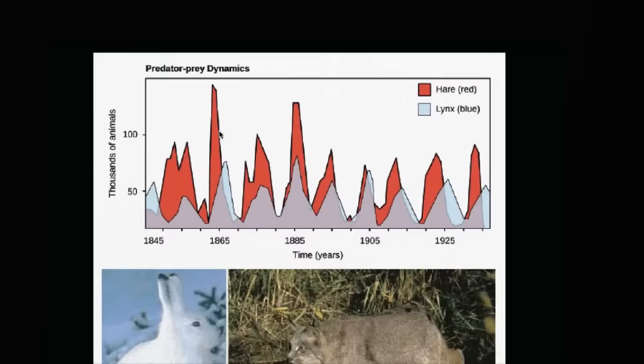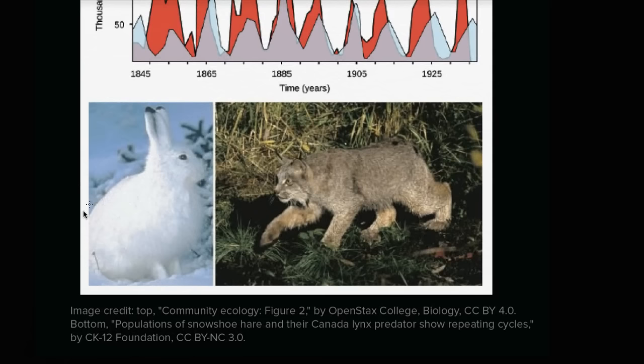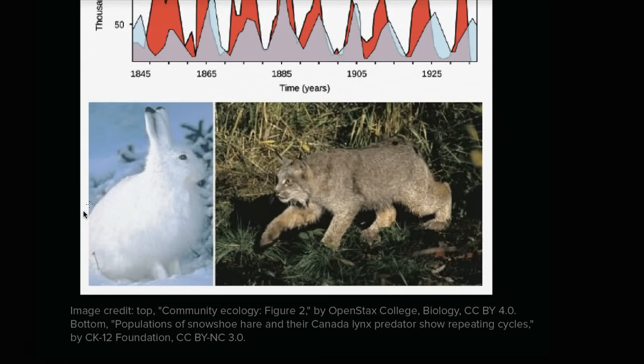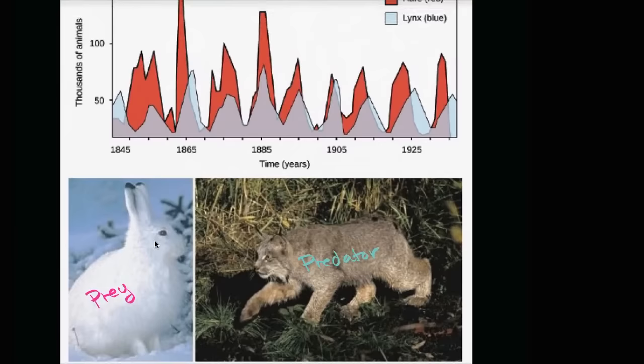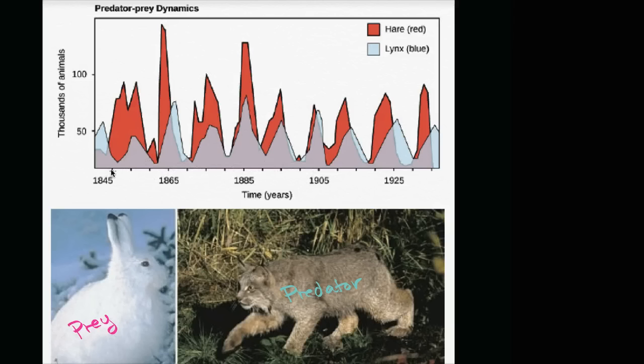One of the often cited examples is interactions between the snowshoe hare, which would be the prey in this situation, and the Canadian lynx, which would be the predator in this situation. And you see a very similar cycle to what I just drew, kind of just reasoning through it. And this right here is actual data. You see the passage of time here. And this is a long passage of time. We're starting in the early 1800s, going all the way to the early mid-1900s. So it's roughly 100 years of data that we're showing. And in the vertical axis you have thousands of animals. And we're plotting both the population of snowshoe hares and Canadian lynx in a certain area on this chart.